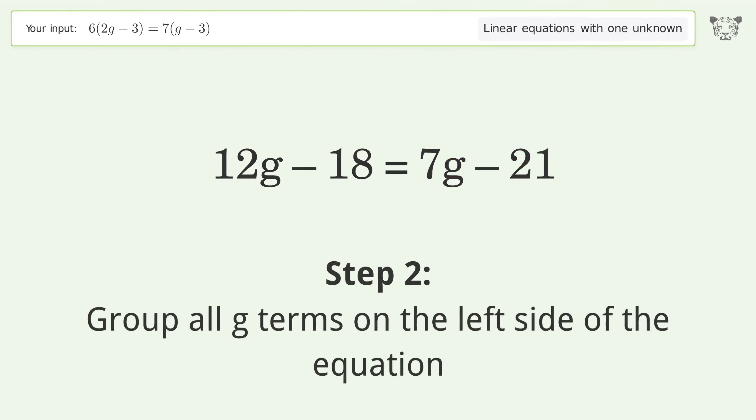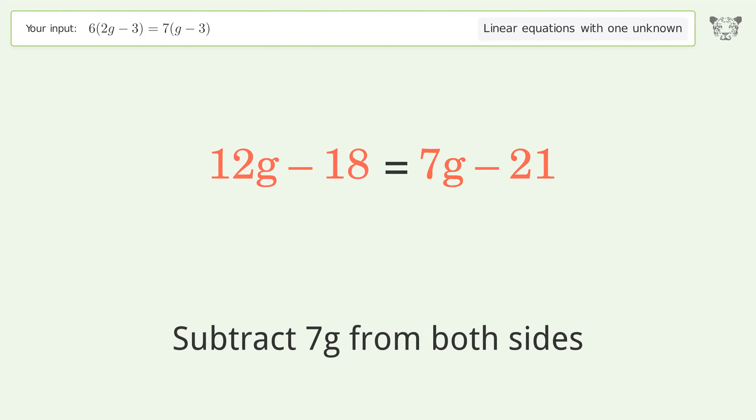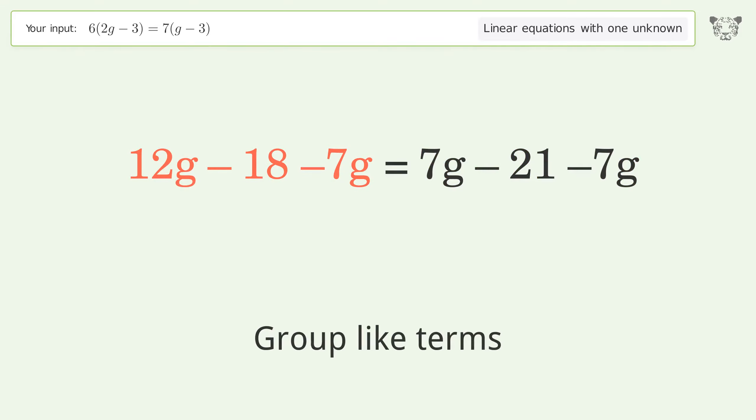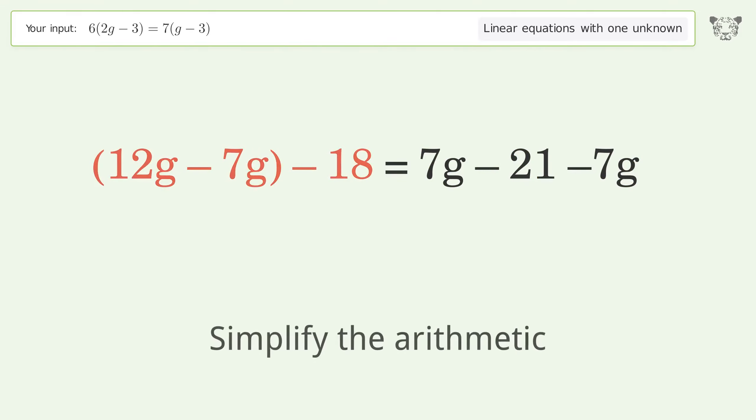Group all g terms on the left side of the equation. Subtract 7g from both sides. Group like terms.